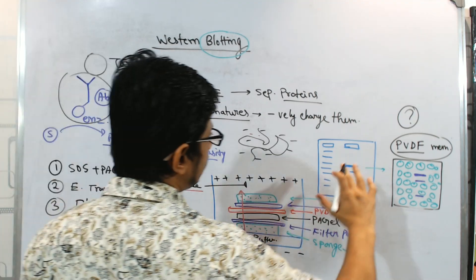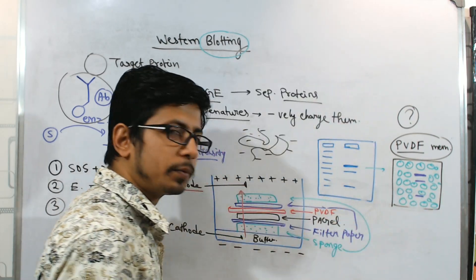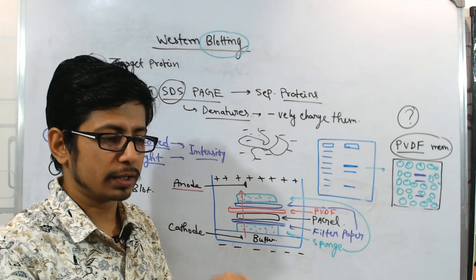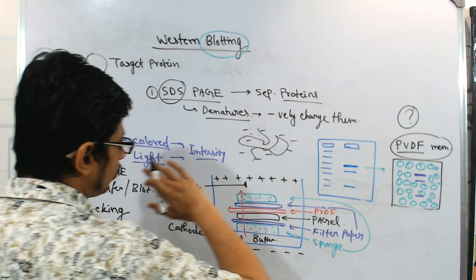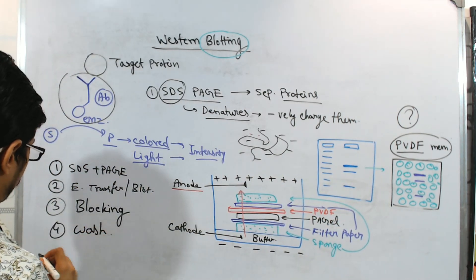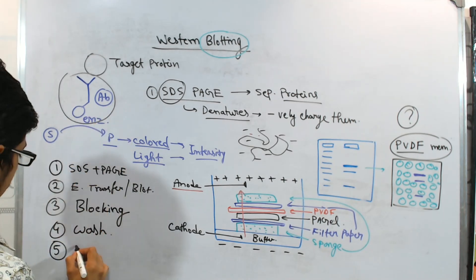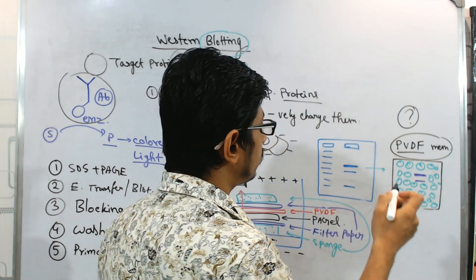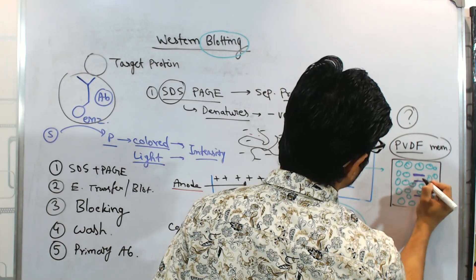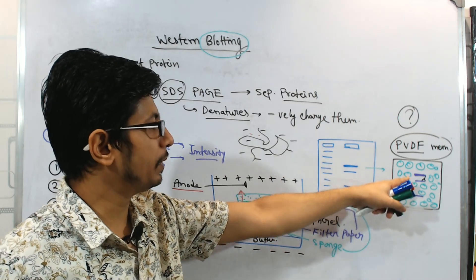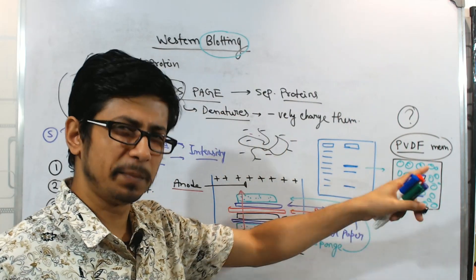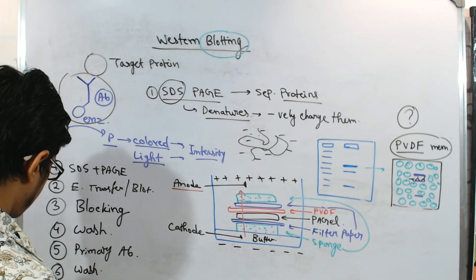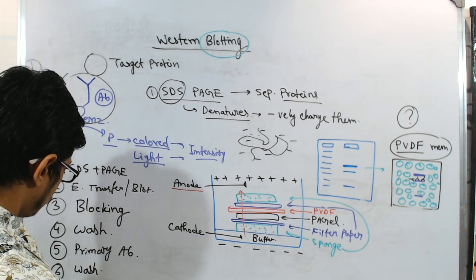Once blocking is done, we ensure that the target protein locations are preserved while the surrounding PVDF is filled with milk or BSA. After this step we do a wash with buffer after every block. Then we add the primary antibody. Generally, two antibodies are used: the primary antibody specifically binds to the target region of the protein. After primary antibody incubation, we wash again and then proceed to the secondary antibody.